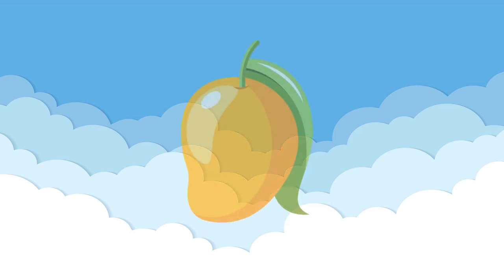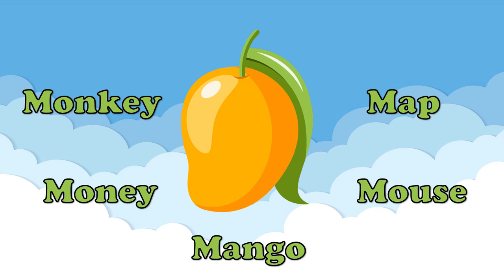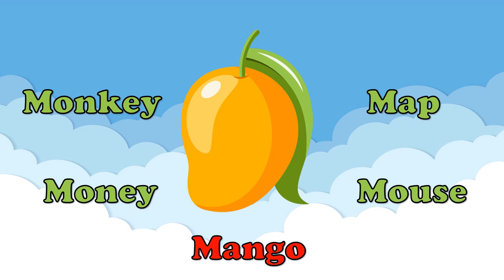Let's play this game. Identify the name of this picture. What picture do you see? Is it a monkey, money, mango, map, or mouse? Correct! It's mango.